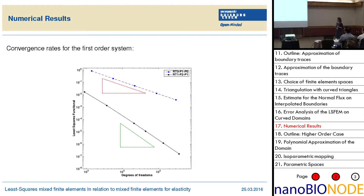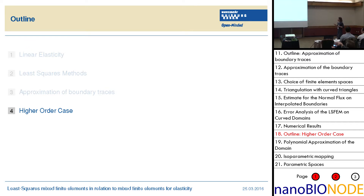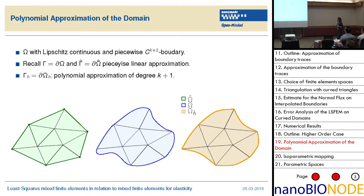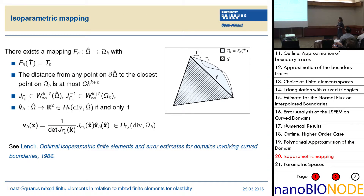If you use higher order elements, the convergence would be not two but something like 1.5 — that's a problem. So for the next higher order case you will have to use parametric elements. Then you get a polynomial approximation of the boundary using the isoparametric framework to construct the map F that maps the polygonal approximation to the polynomial approximation of the boundary.